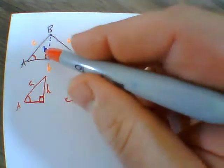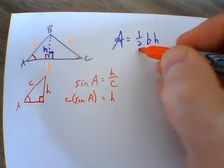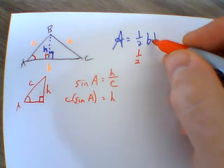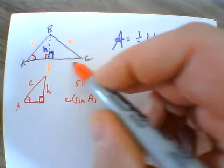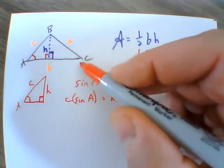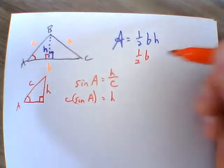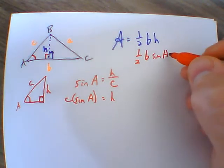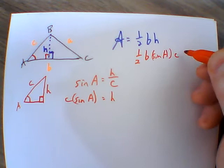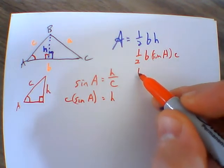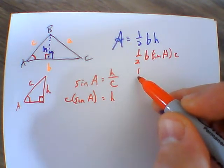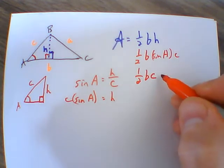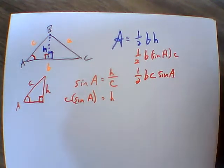So my height is this right here. So if I come back up, I have one half times, I would have B for my base. This would be my overall base right here. And then my height would be sine of A, and then times c. So what we see, kind of clearing this up, we have one half base, or B times c, times sine of A.